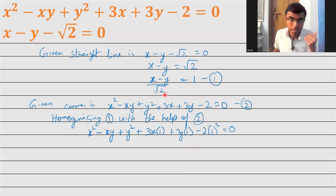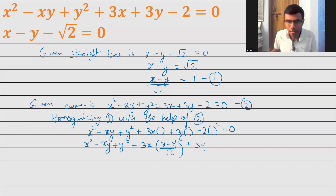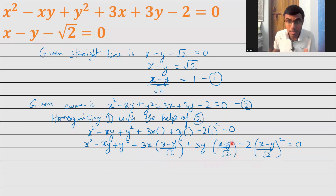So substituting, this becomes x squared minus xy plus y squared plus 3x into (x minus y) by root 2 plus 3y into (x minus y) by root 2 minus 2 into (x minus y) by root 2 whole squared, equal to 0. Now if I multiply through, every term's degree will be 2. This is exactly what homogenization requires.